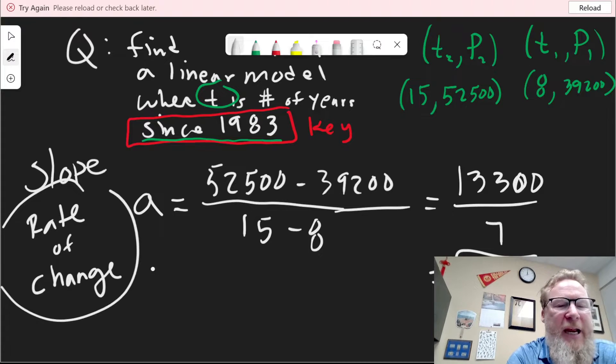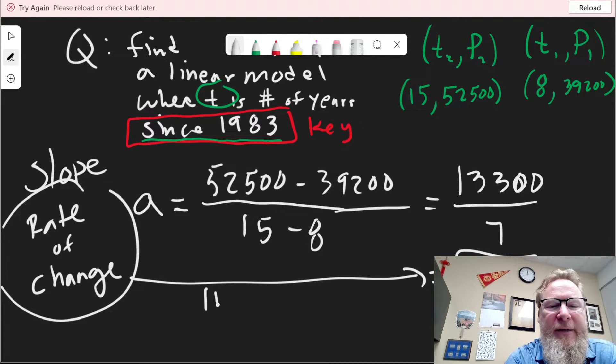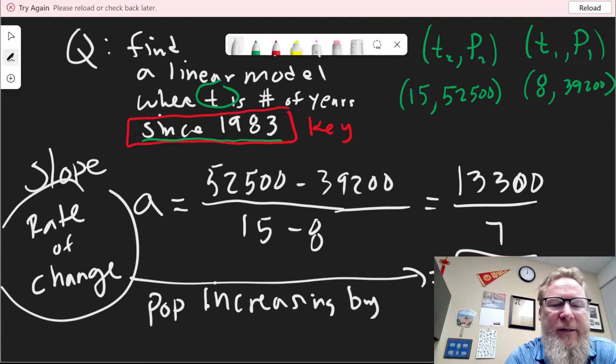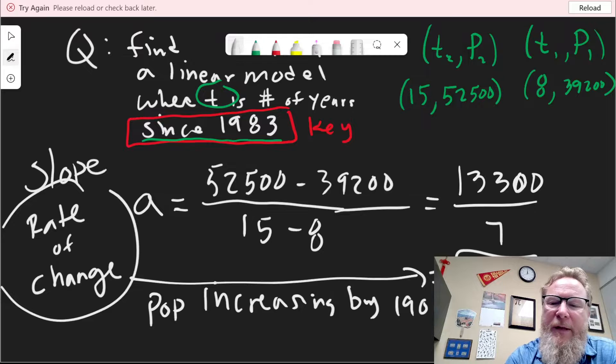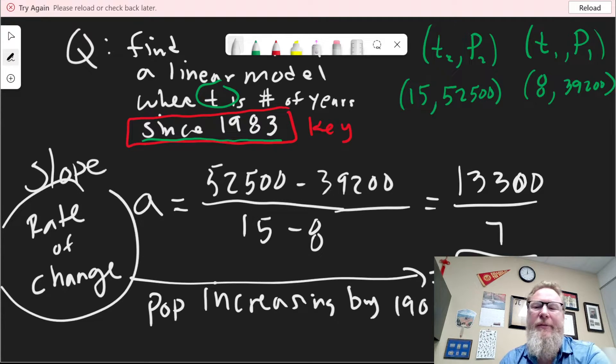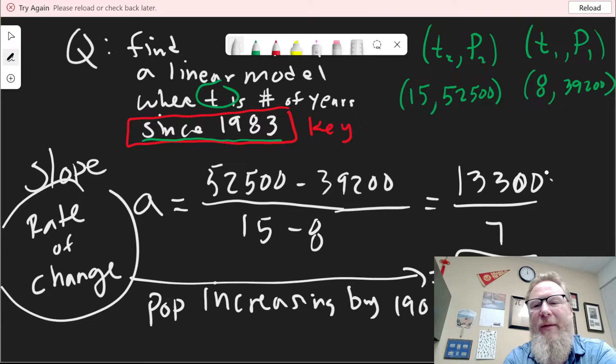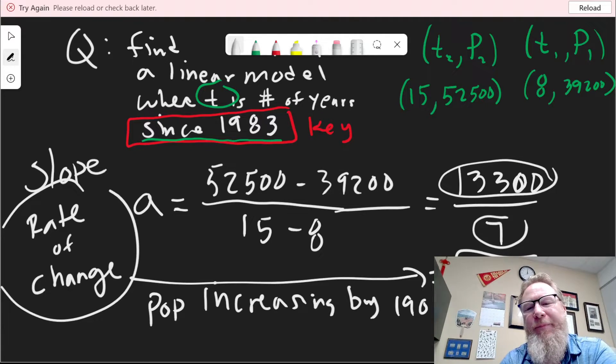So first, we want to find A, which is the slope, also known as the rate of change. So A is the rise over the run. I'm going to go 52,500 minus 39,200 divided by 15 minus 8. That's 13,300 divided by 7, which equals 1,900.